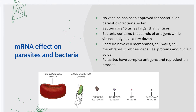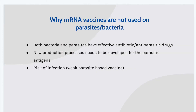The mRNA vaccine does not work on parasites and bacteria. So far, no vaccine has been approved for bacterial or parasitic infections. This is because of the complexity of the bacterial structure and the complex reproduction processes that parasites have. An E. coli bacterium is at least 10 times larger than any known virus. Luckily, we already have very effective antibiotic and antiparasitic drugs that can easily cure these infections. For parasitic infections, new production processes are needed for the mRNA vaccine to target the antigens.